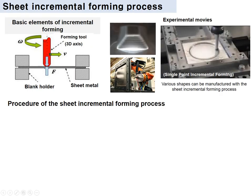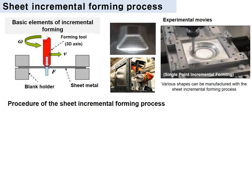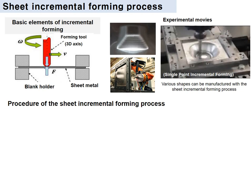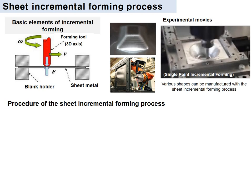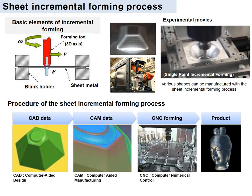Sheet incremental forming process is a typical example of the flexible manufacturing process. It requires three basic devices: the tool, holder, and material. The tip of the tool is connected to the three-dimensional CNC machine, and the tool moves along the dedicated tool path, as you can see in the movies.